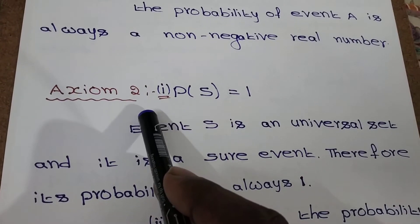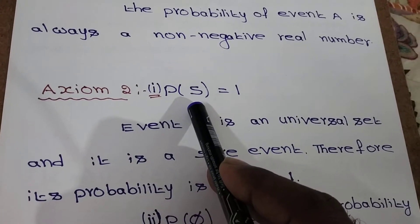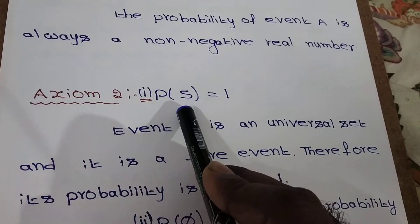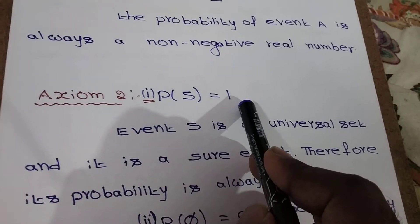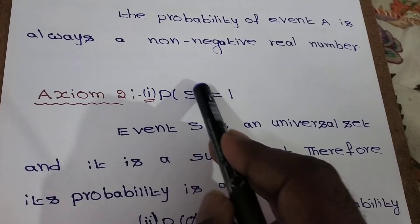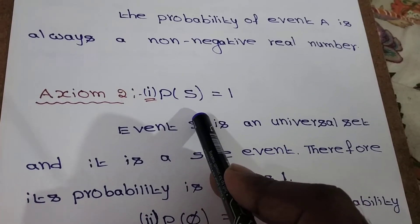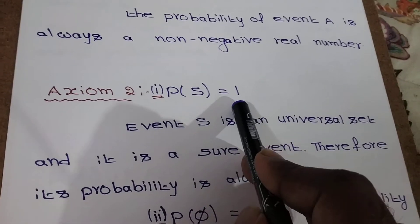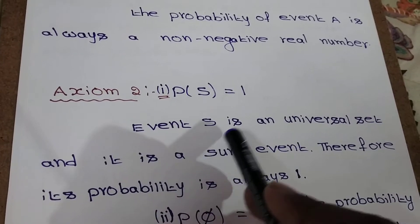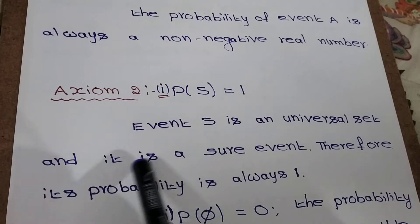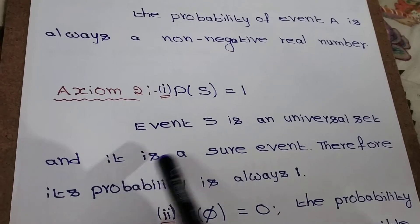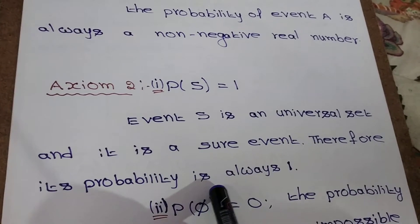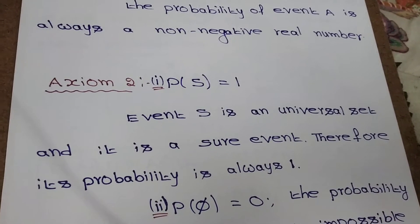Next, axiom 2. The first part is probability of S, P of S, equal to 1. Here S is a sure event. For a sure event, probability is always 1, P of S equal to 1. Event S is a universal set and it is a sure event, therefore its probability is always 1.